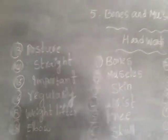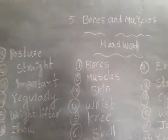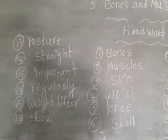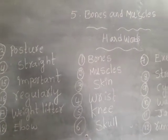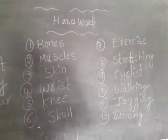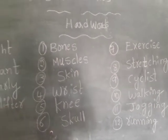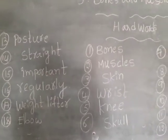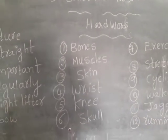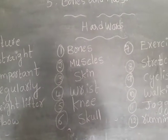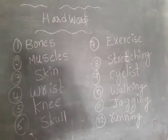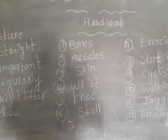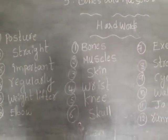These are the bones and muscles hard words. You can watch the video and write the bones and muscles hard words in your notebook. Practice these spellings — total eighteen spellings. You can learn all eighteen spellings and write them in your notebook two times. Okay children, thank you.